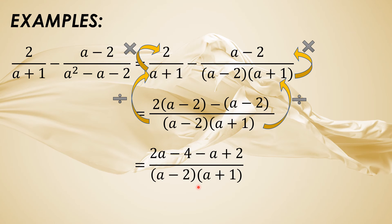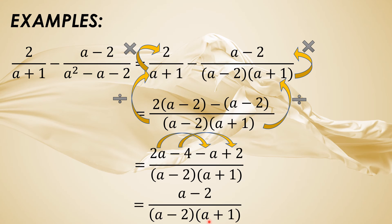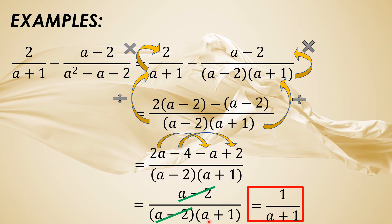Copy the denominator (a minus 2)(a plus 1). Next is to simplify or combine like terms. Since parehong may variable a ang 2a at negative a, icocombine natin yun. And then negative 4 and positive 2: 2a minus a is a, and negative 4 plus 2 is negative 2. Copy the denominator (a minus 2)(a plus 1). Let us cancel (a minus 2) in the numerator and (a minus 2) in the denominator. So the final answer is 1 over (a plus 1). Naglagay tayo ng 1 sa numerator since wala nang natira, which is equivalent to 1.